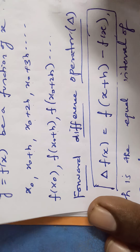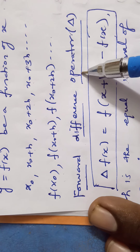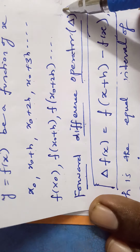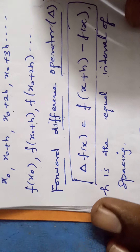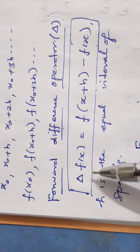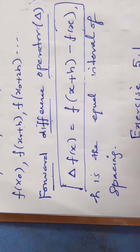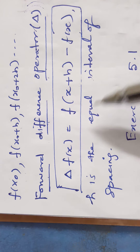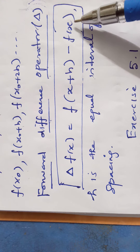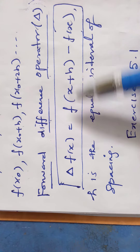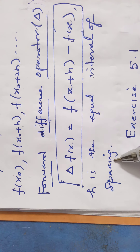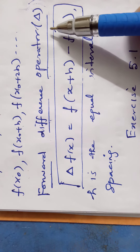Next is the forward difference operator, denoted as delta (Δ). The formula for the forward difference operator is: Δf(x) = f(x + h) − f(x), where h is the equal interval of spacing.